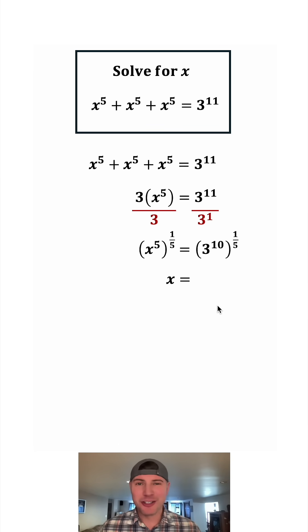And then on the right hand side we can also multiply the exponents. And ten times one fifth is equal to two. Now we have x is equal to three squared. And three squared is equal to nine.